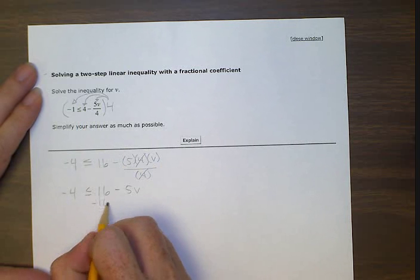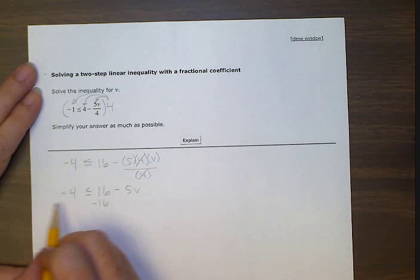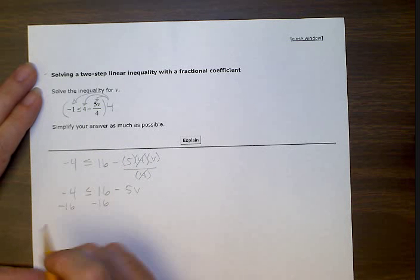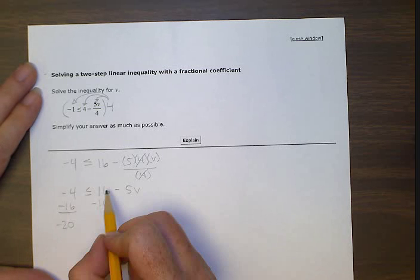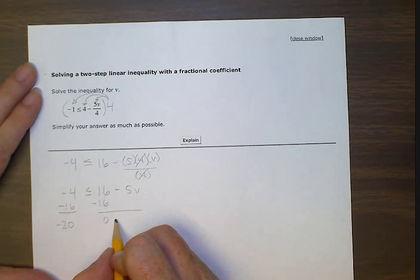Subtract 16. See, this is a positive 16. To move it, we need to do the opposite of 16 on both sides of our inequality, which we're treating like an equation. This gives us a total of negative 20. This 16 subtract 16 gives us zero, and we still have a minus five v.